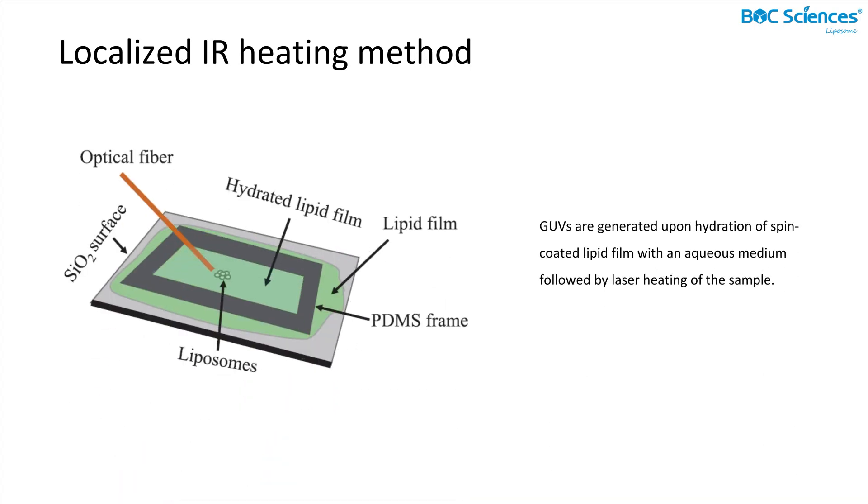Third, the localized IR heating method. This method consists of two steps. First, the polydimethylsiloxane frame was placed on a lipid film that was coated on the silicon dioxide surface to form a chamber, and PBS buffer was injected into the chamber for lipid film hydration. Then, the IRB laser was guided by optical tweezers to heat the target site for several minutes locally.